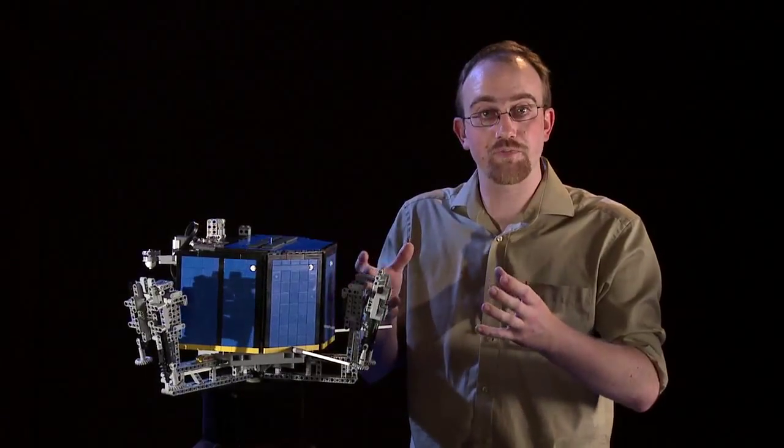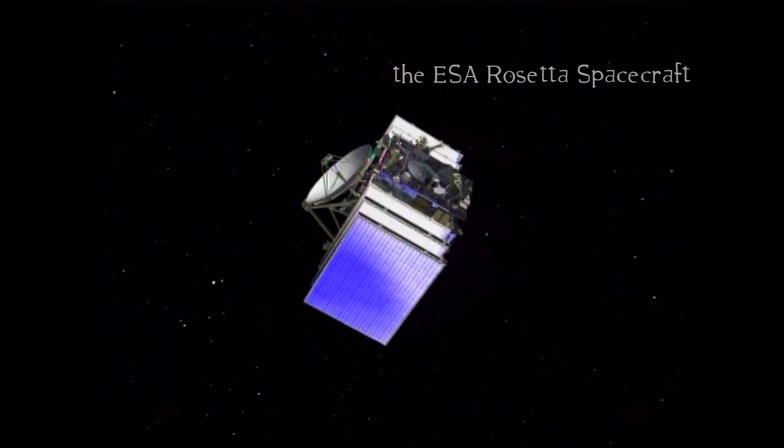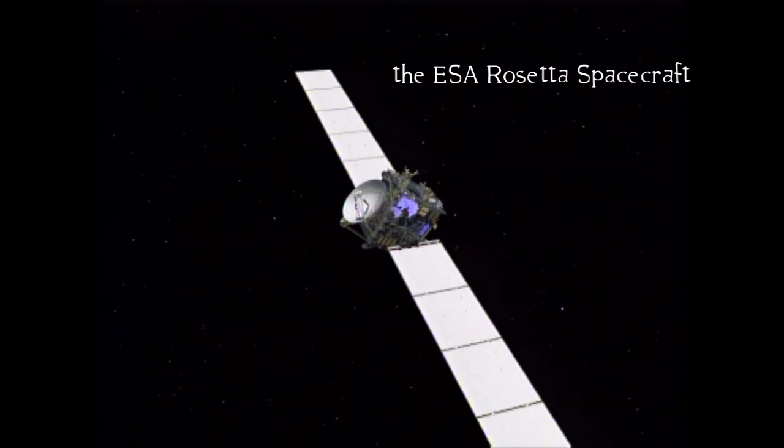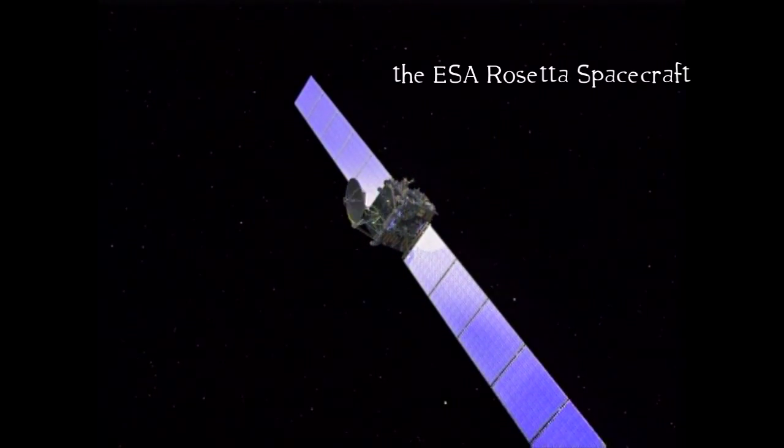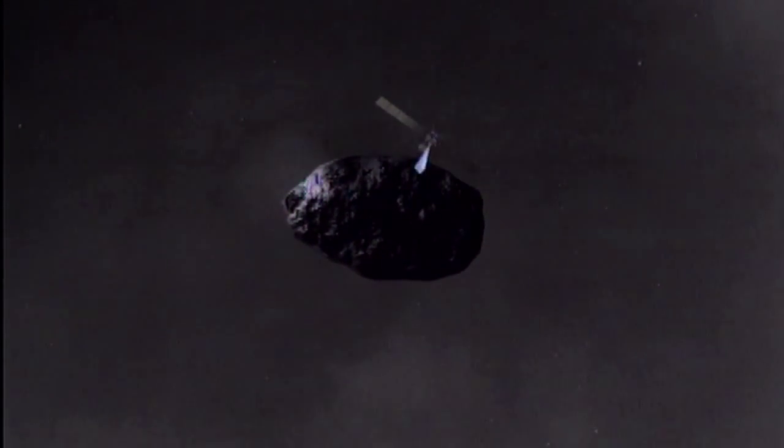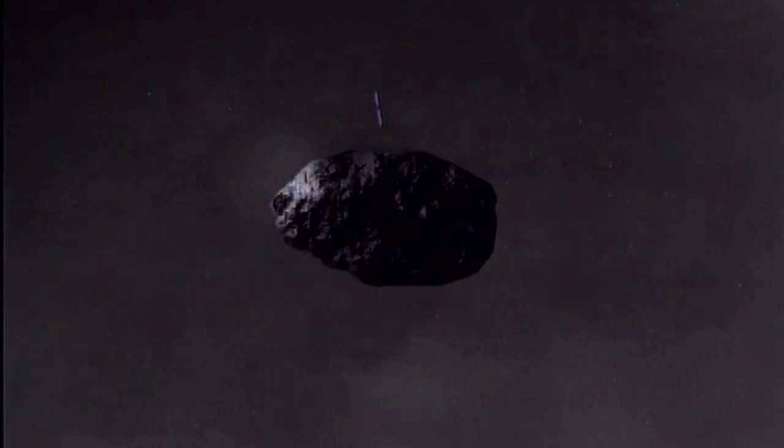After many iterations, this mission became Rosetta. Rosetta is quite a complex mission. It comprises an orbiting spacecraft. This spacecraft will orbit the nucleus of a comet, producing a global map, doing some really cool science, trying to work out what the comet's made of from orbit.